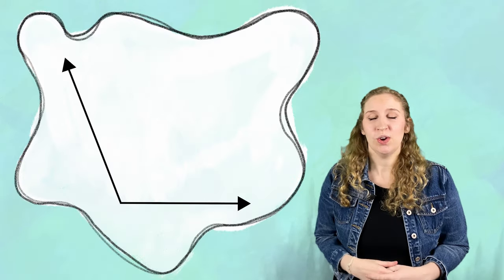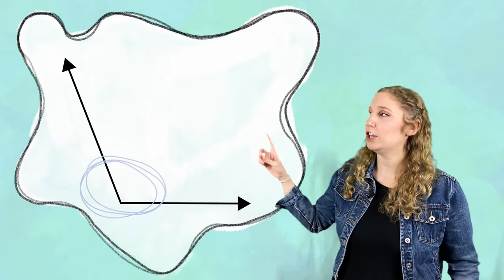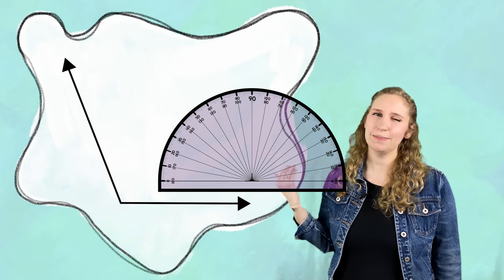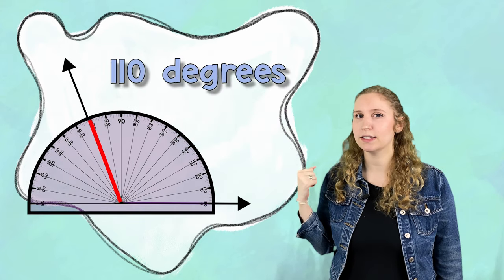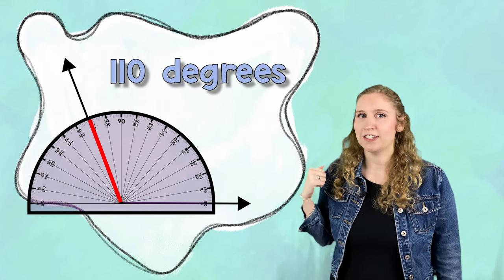When you find an angle, you're going to measure that angle. Sometimes you can measure it by just looking and estimating with your eyes. Let's go over those five types.